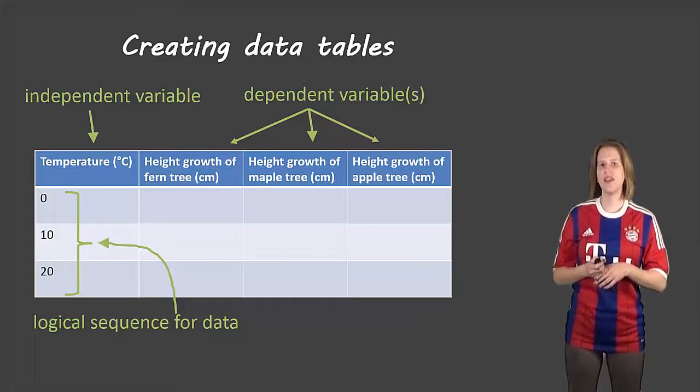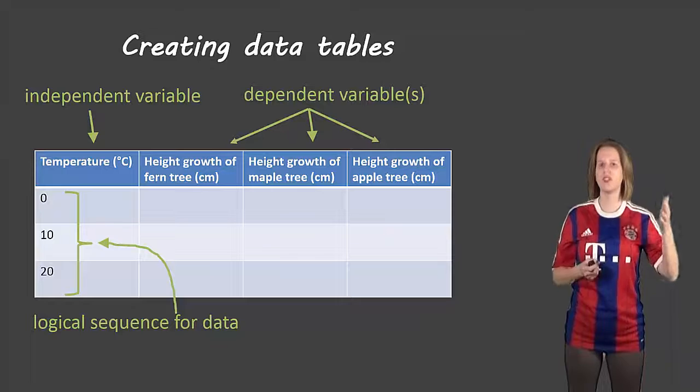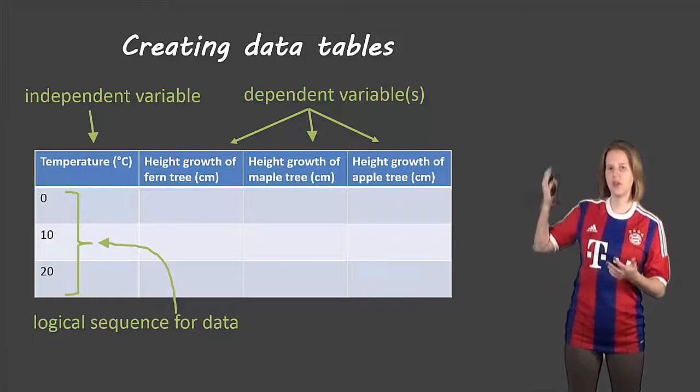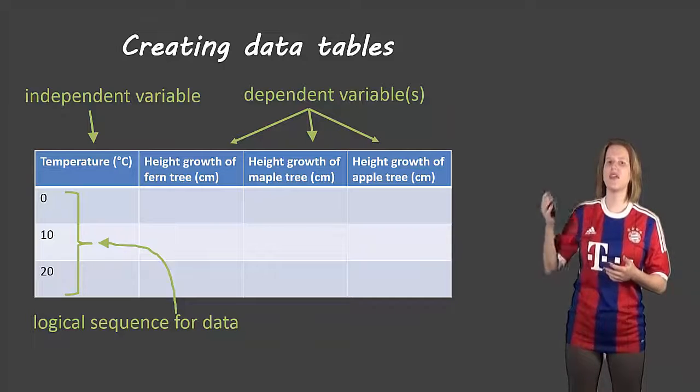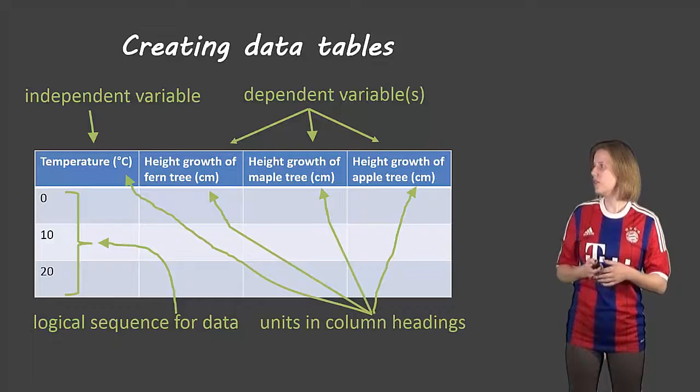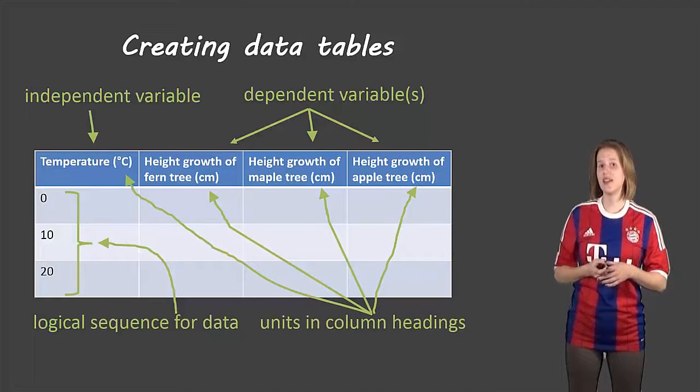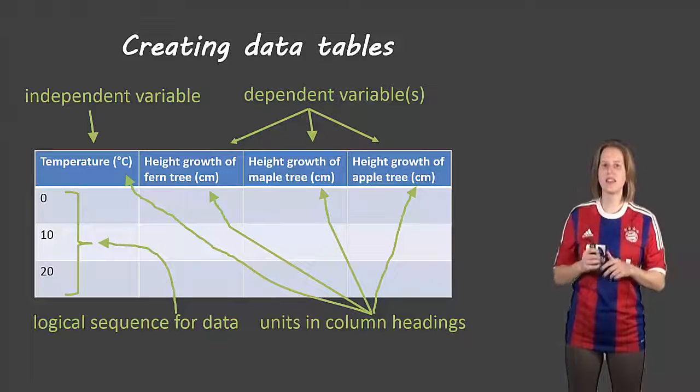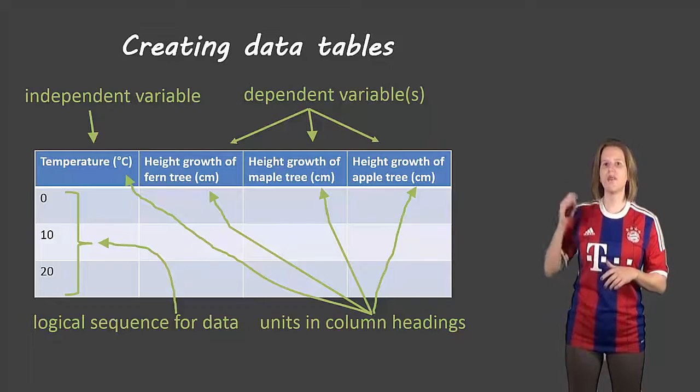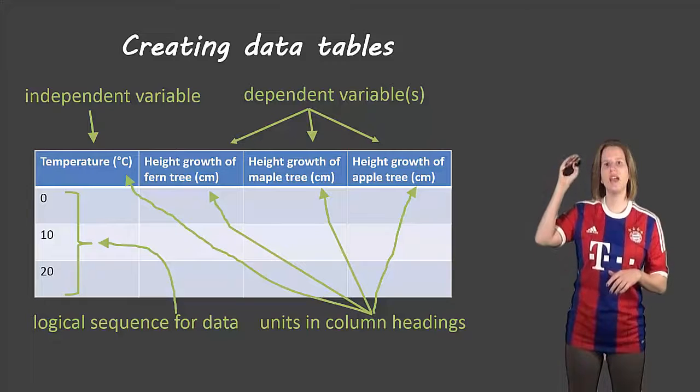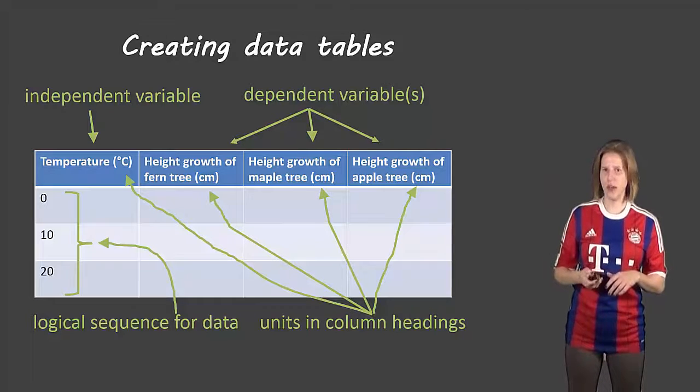Next thing, the dependent variables go in the columns to the right of that. And if there's only one dependent variable, you would just have the one column. If there are multiple dependent variables, they each get their own column. Now you'll notice there are units in the column headings. So temperature and then in brackets it says degrees Celsius, the height in brackets it says centimeters. So instead of writing the units in each of the little blocks all the way down, you put it in the title and then below that you just need to put numbers.